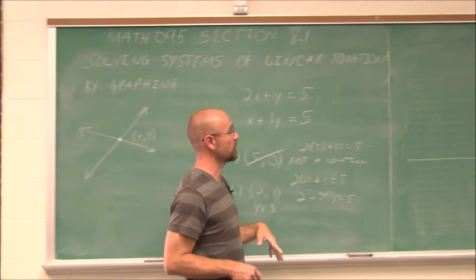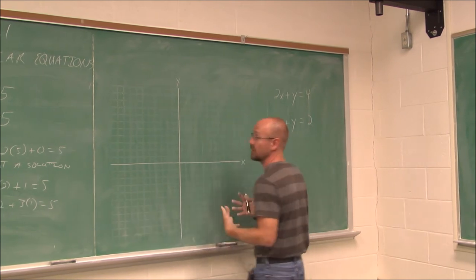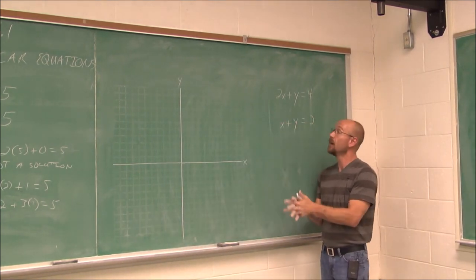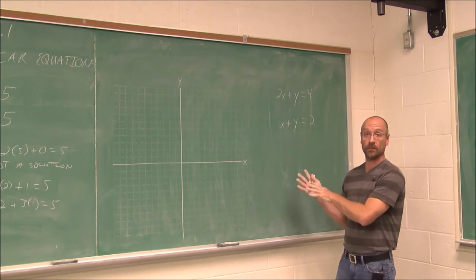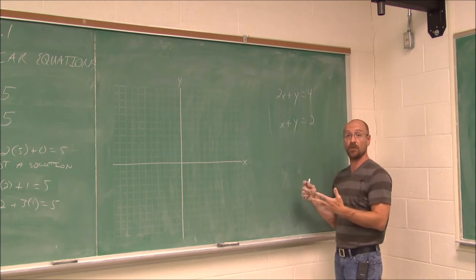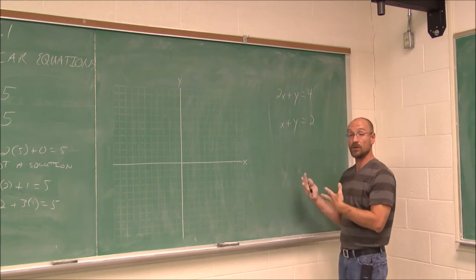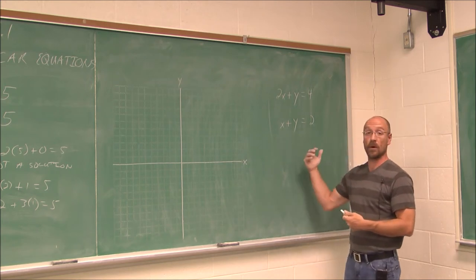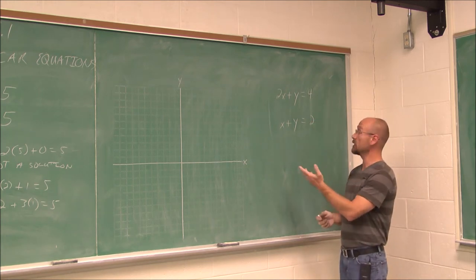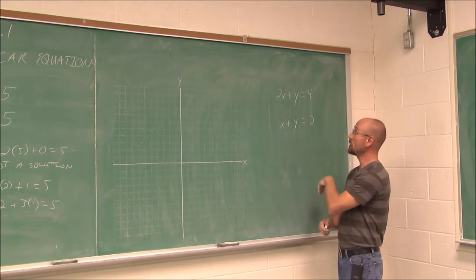Let's look at an example where we're going to solve it by actually graphing the lines, and hopefully we recall from chapter 6 how to graph lines. We can do it many different ways — we can put them in slope-intercept form and use the intercept as our starting point and use the slope, or maybe we want to use the intercepts to graph it. I'm going to use the intercepts because both of these equations are in general form.